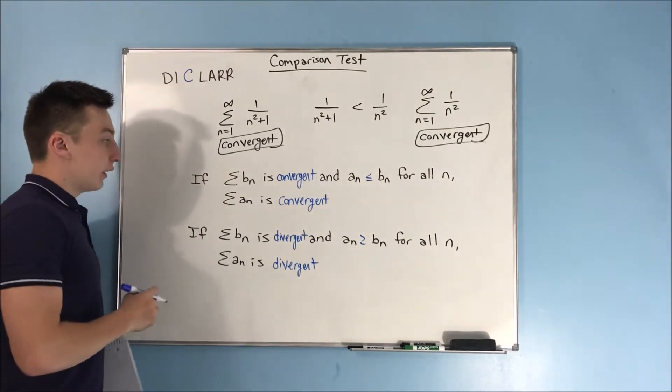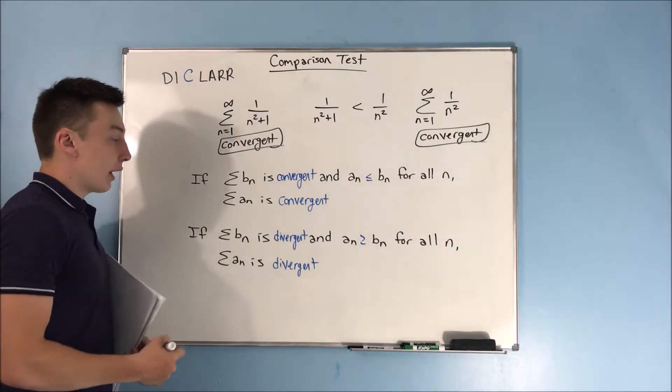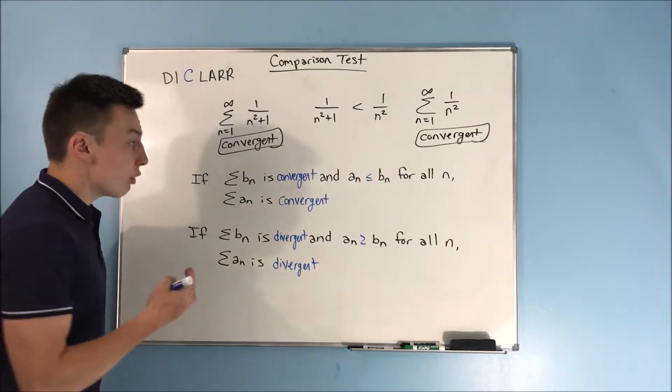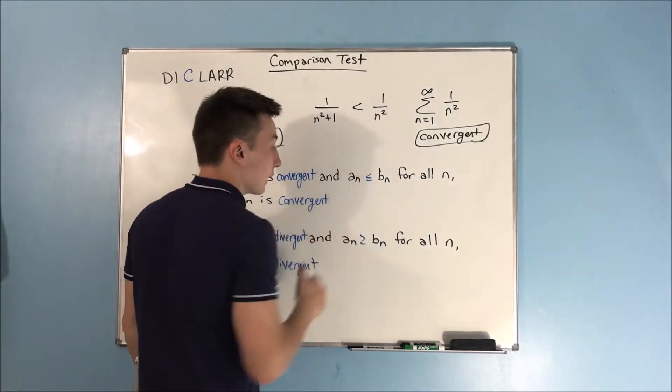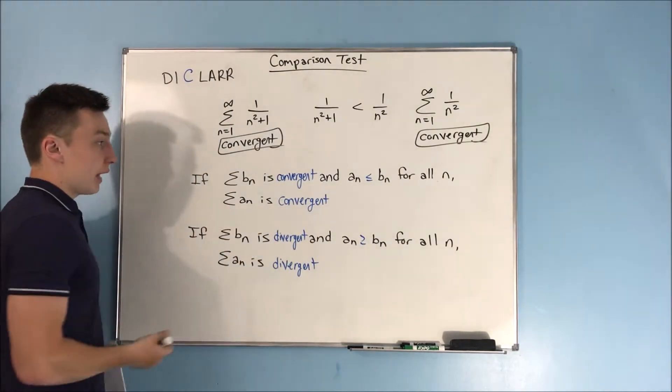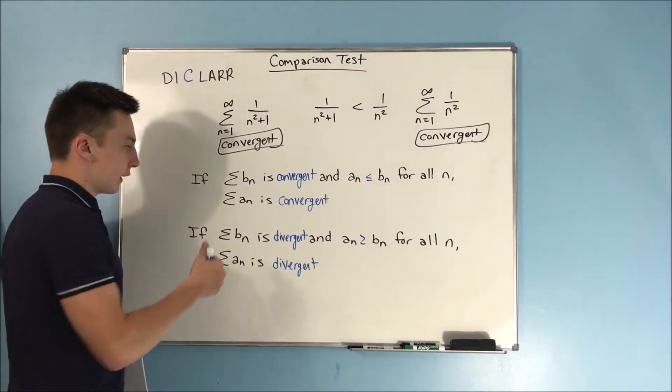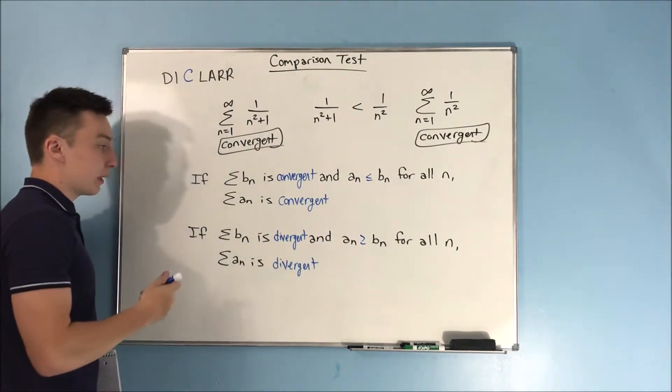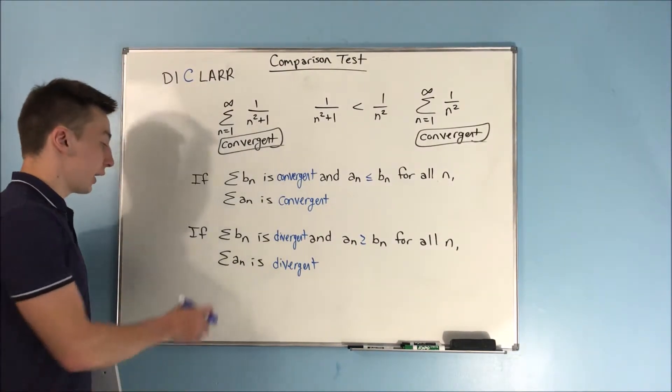So basically, written out here, if you have the series b sub n and that's convergent, and you know that a sub n is always going to be less than or equal to b sub n for all of n, then that sum that's smaller, the sum of a sub n, that's going to be convergent.